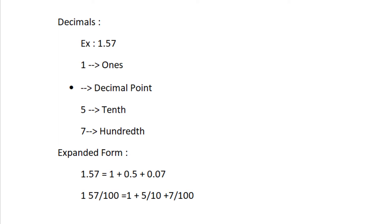We can expand this decimal value in two ways. First, the decimal value of 1.57 is equal to 1 plus 0.5 plus 0.07. We can also expand this in fraction form. That is, 1.57 equals 1 plus 5 by 10 plus 7 by 100.